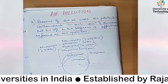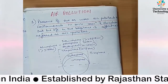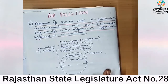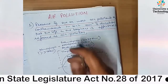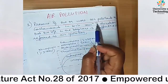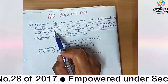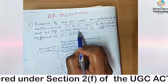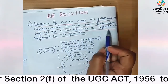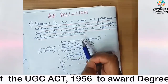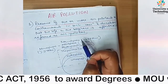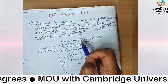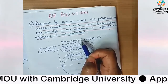Let's start with the first definition. The presence of one or more air pollutants or contaminants in such concentration and duration that the life in the biosphere is affected is referred to as air pollution. Air pollution only occurs when pollutants are above the standard limit and it affects the biosphere around it.